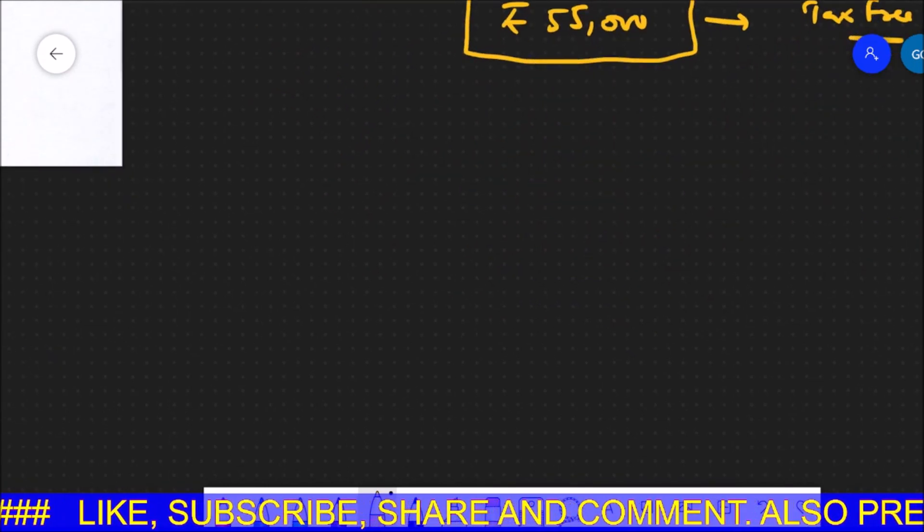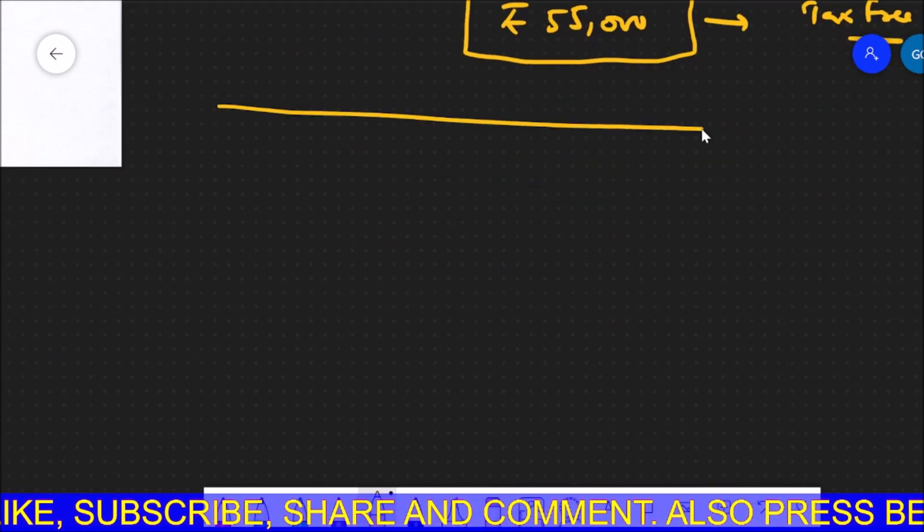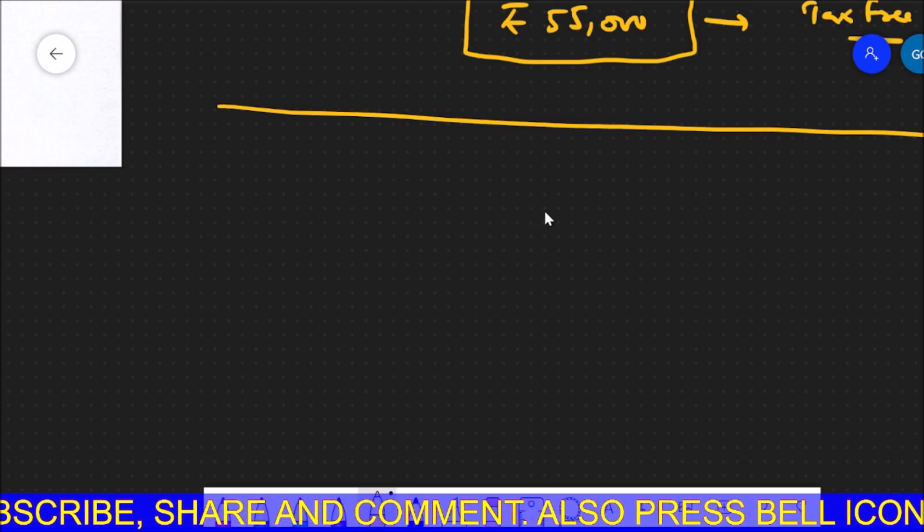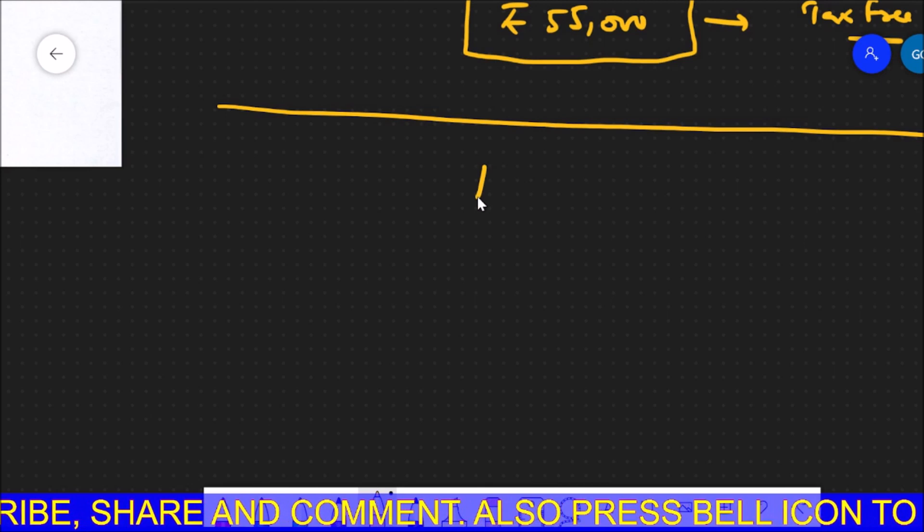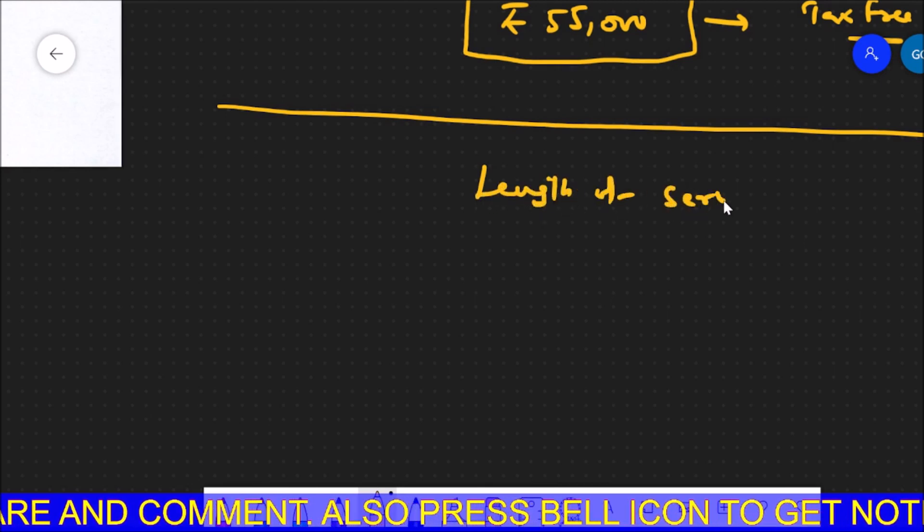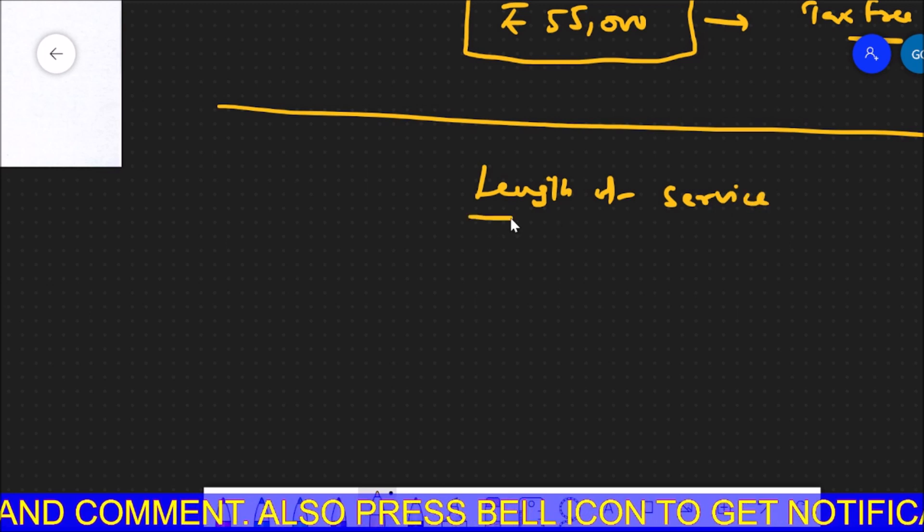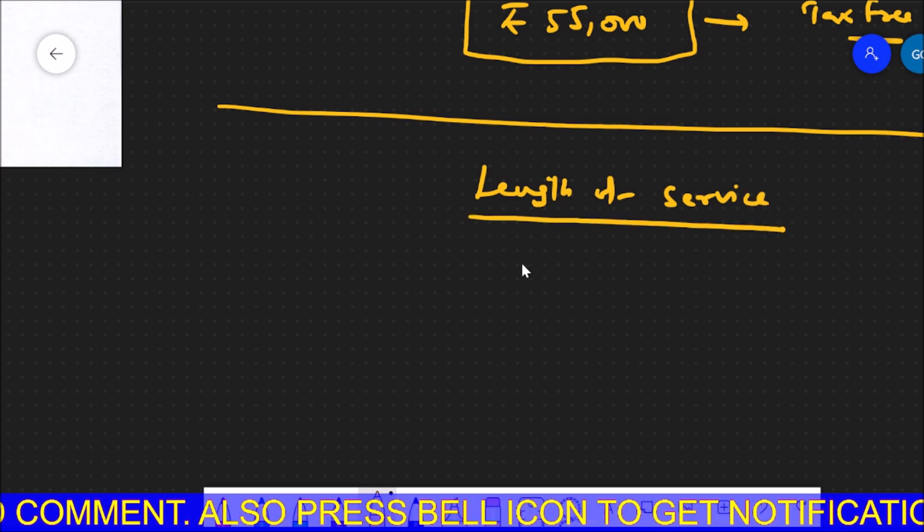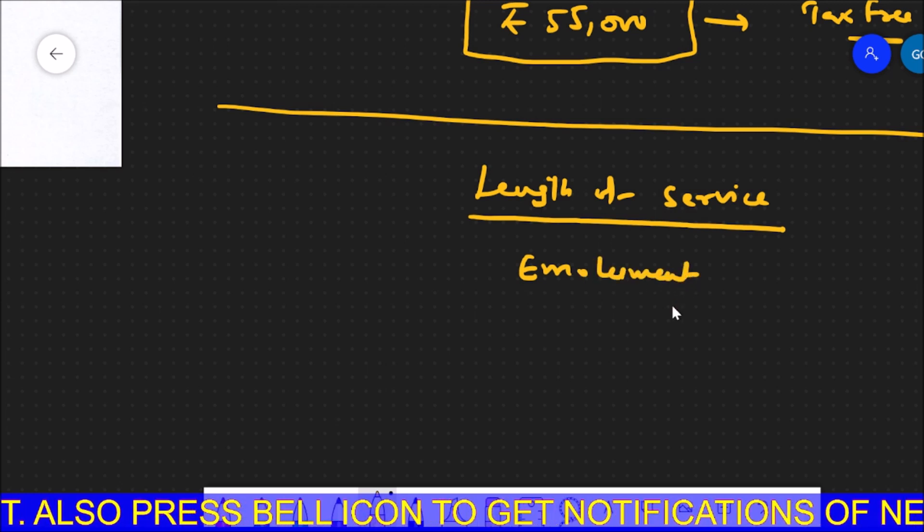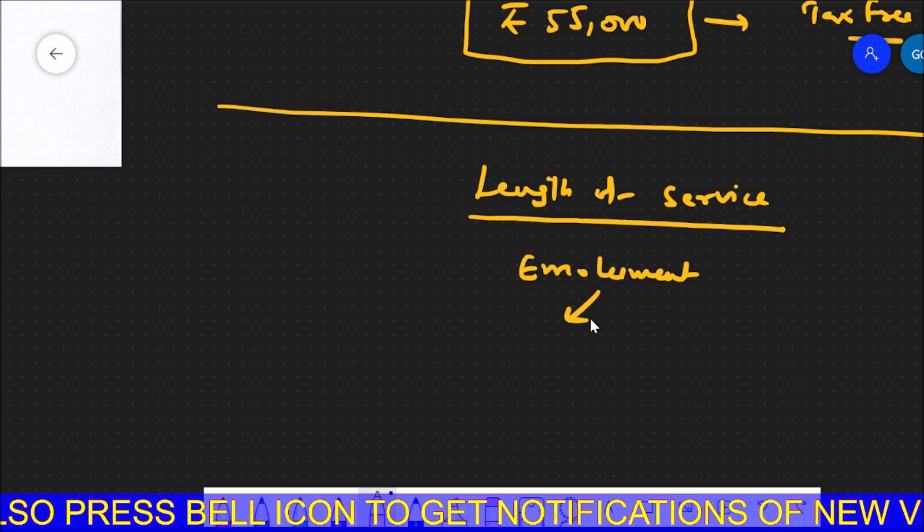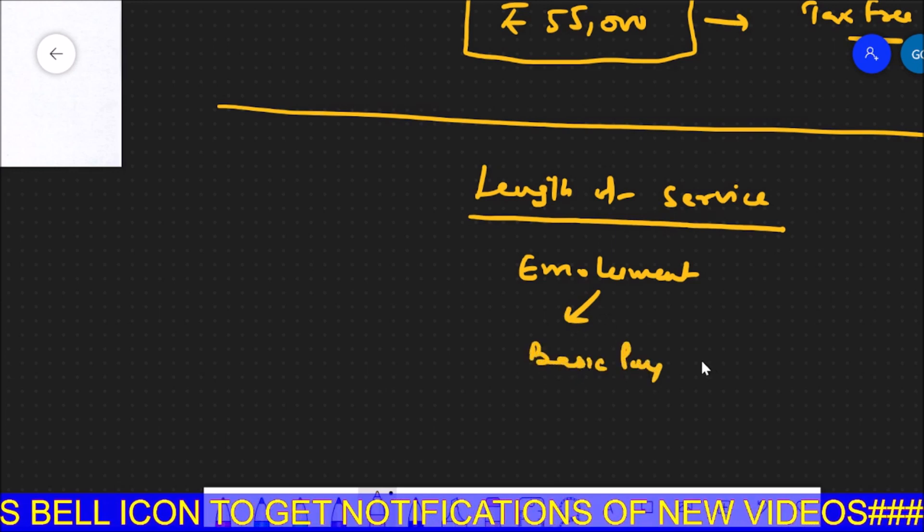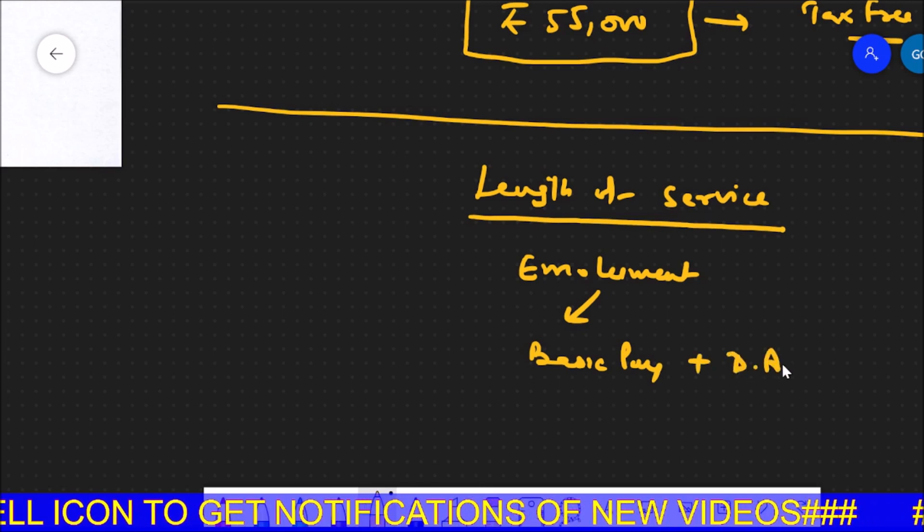The other thing is that the government has said that gratuity calculation will also be changed. According to this, gratuity depends on two things. One is your length of service, which is not changed according to this order, and the second is emoluments. Emoluments are of course changed because in emoluments there are two things: the basic pay which remains the same, and the DA which is changed.